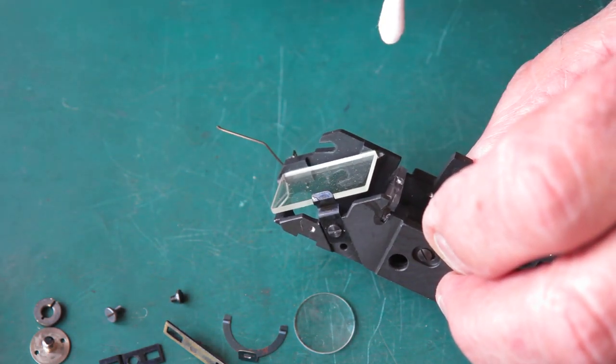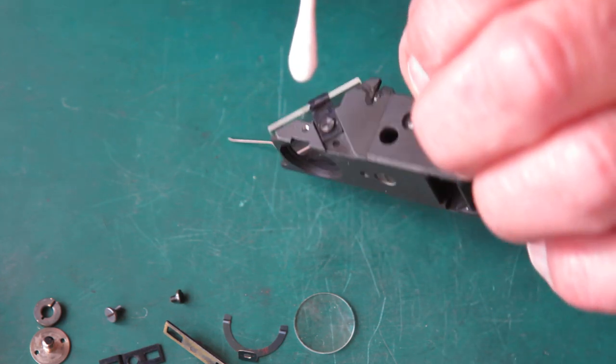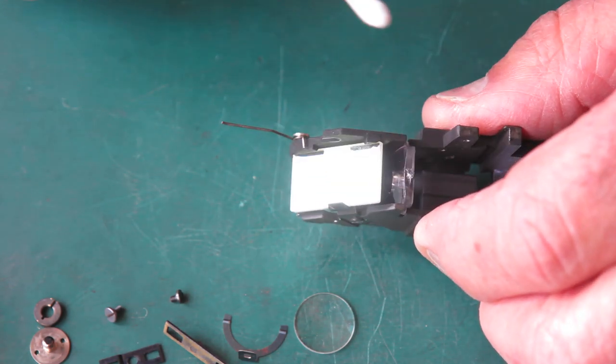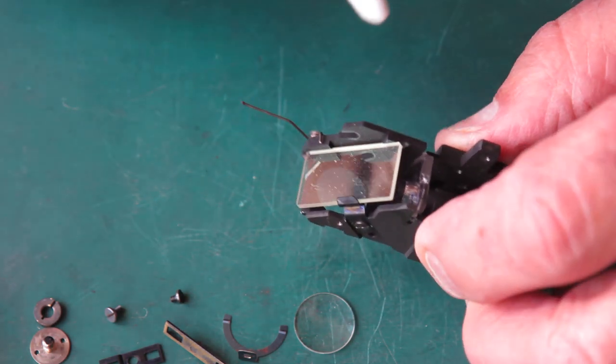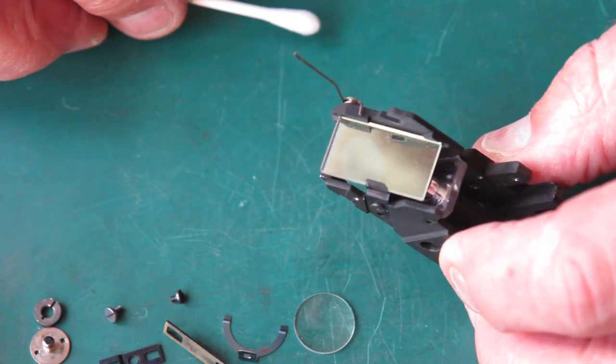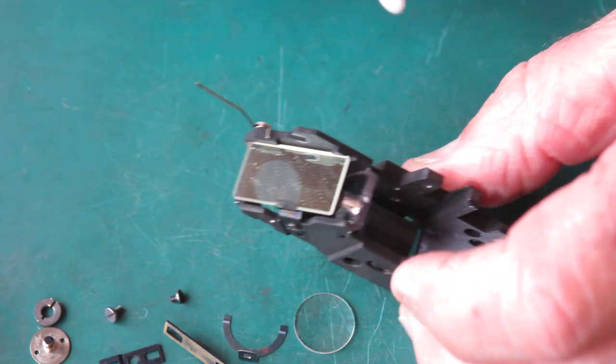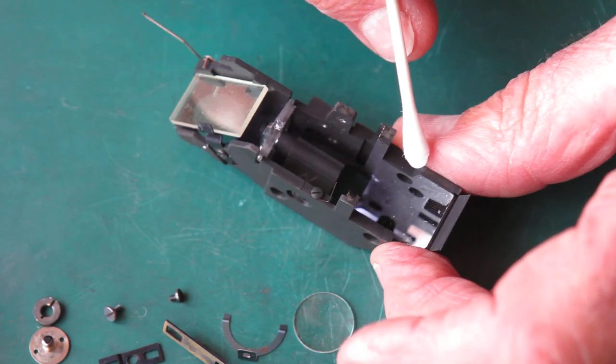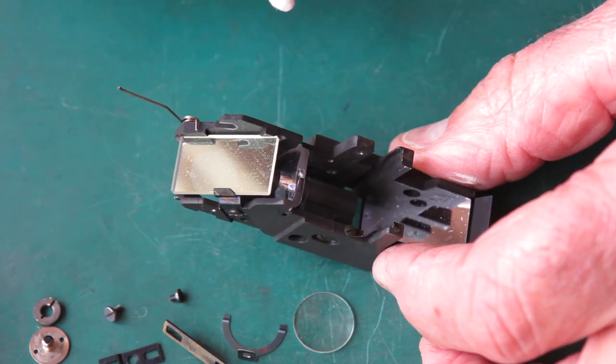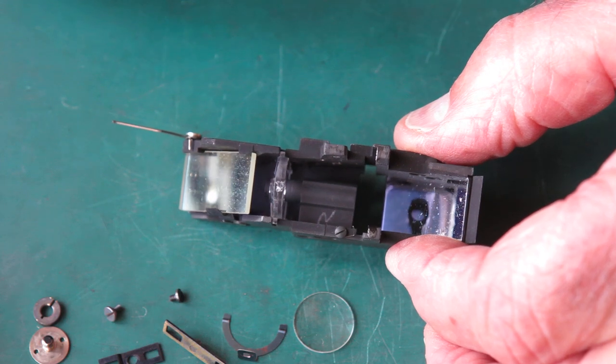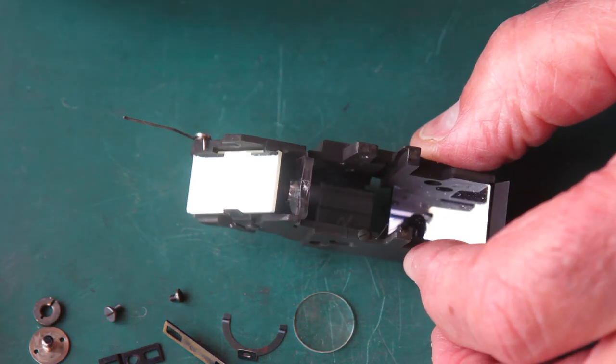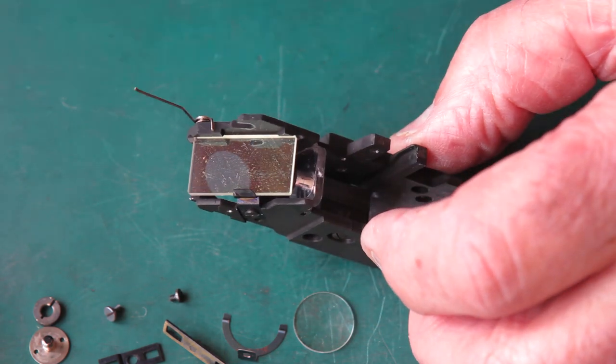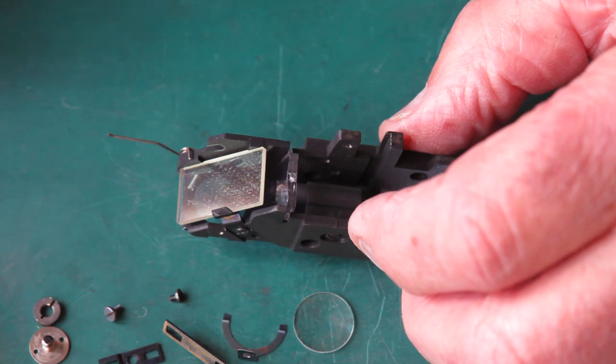You can see that glass there. Look at the state of that. That doesn't look particularly clean. Half that filth will be on one side and half on the other. I usually pre-clean the front surface here, the surface that faces towards the front of the camera. That's plain glass. The other surface that faces towards the back of the camera, that's semi-silvered. You start poking at that, you're likely to lose your silvering. But the front surface is plain glass.